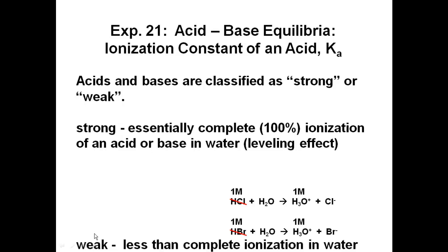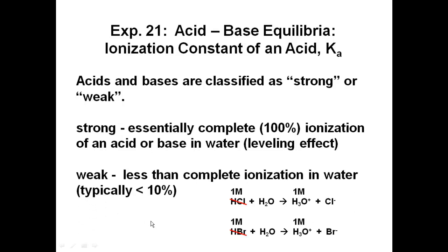Contrary to a weak species, which is less than complete ionization in water, typically less than 10%, with a majority being less than 2 to 5%.